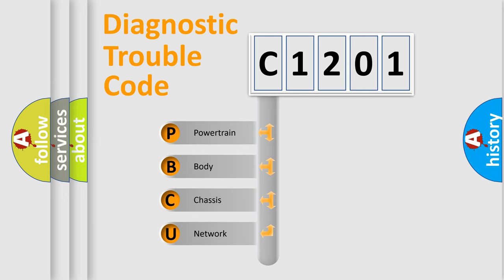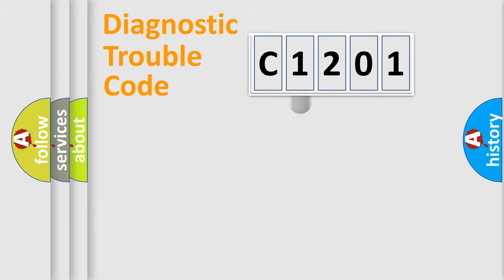We divide the electric system of an automobile into four basic units: Powertrain, Body, Chassis, and Network. This distribution is defined in the first character of the code.